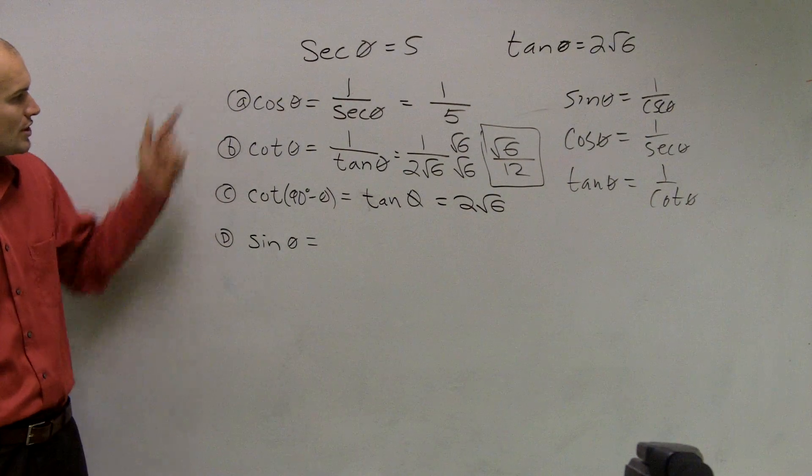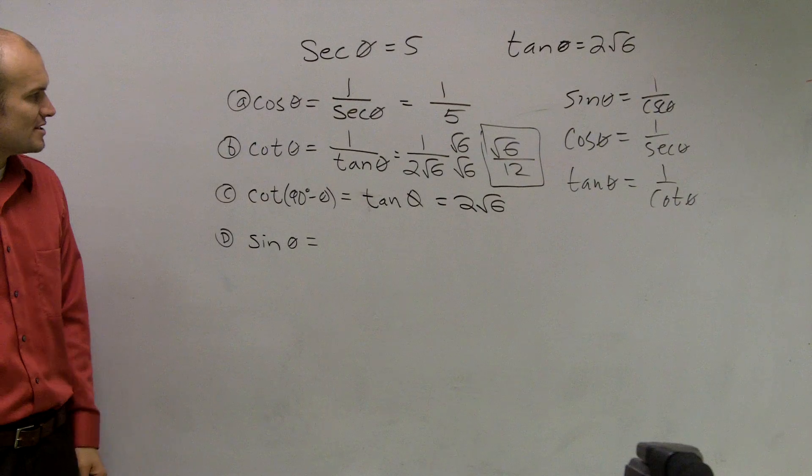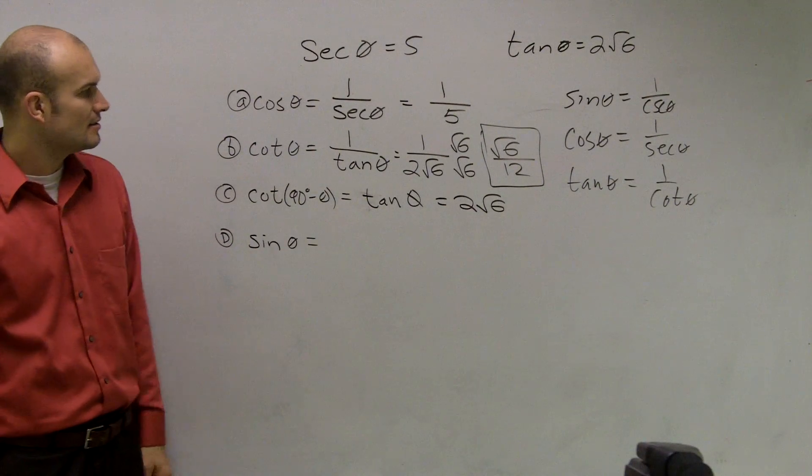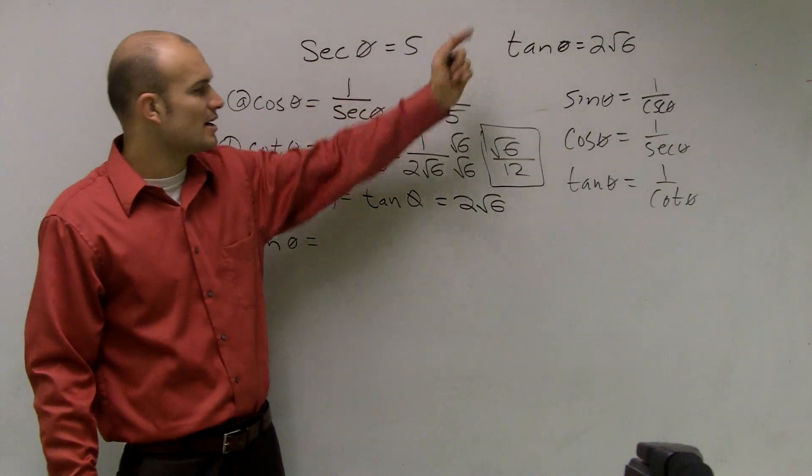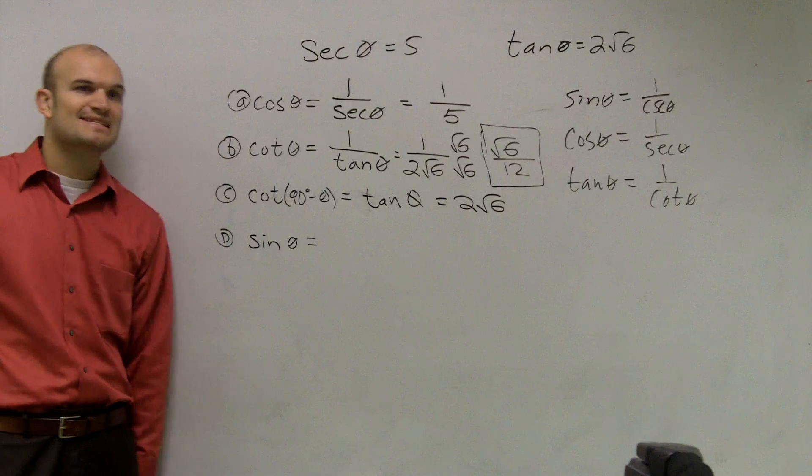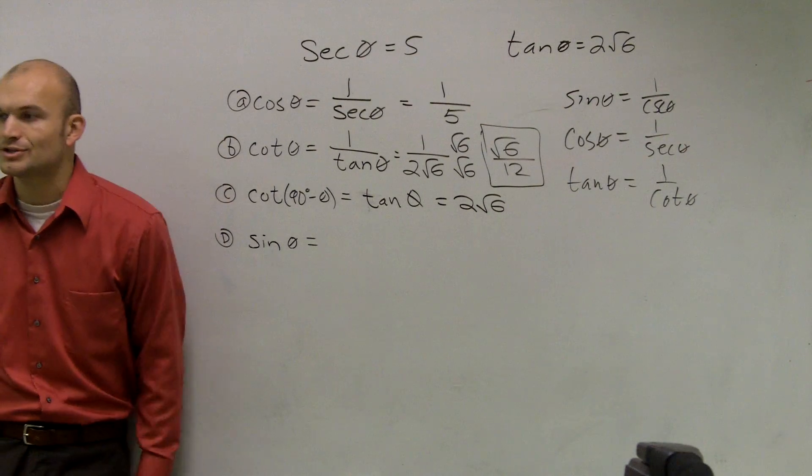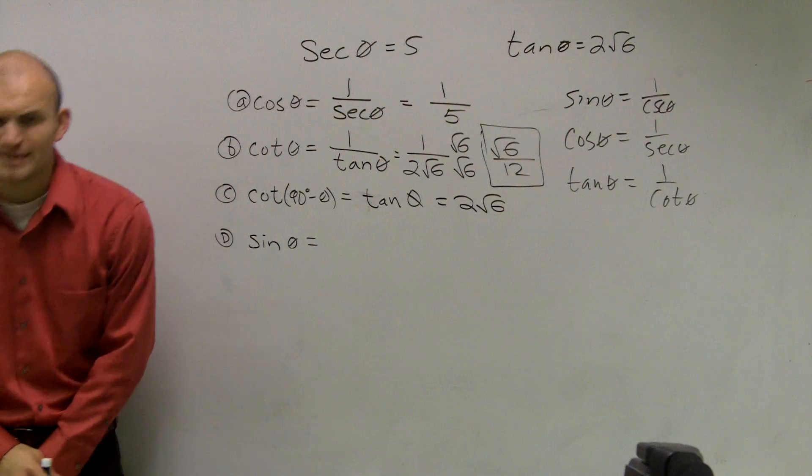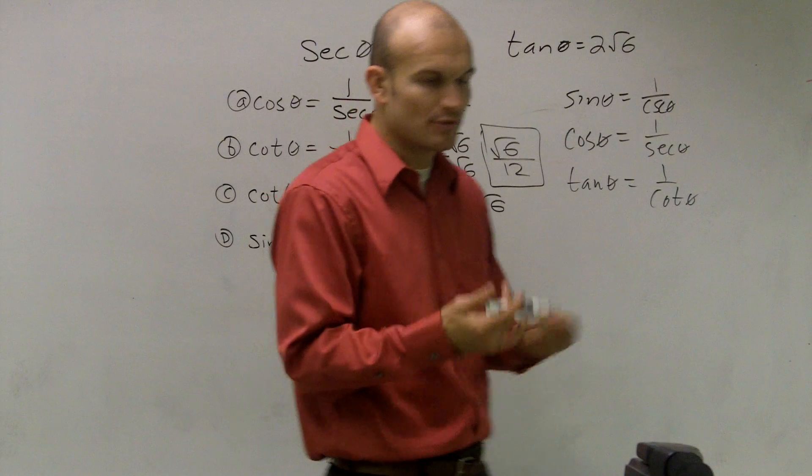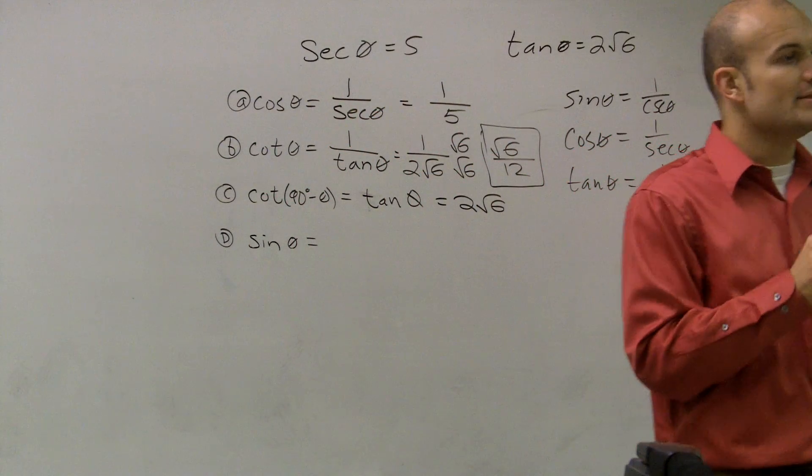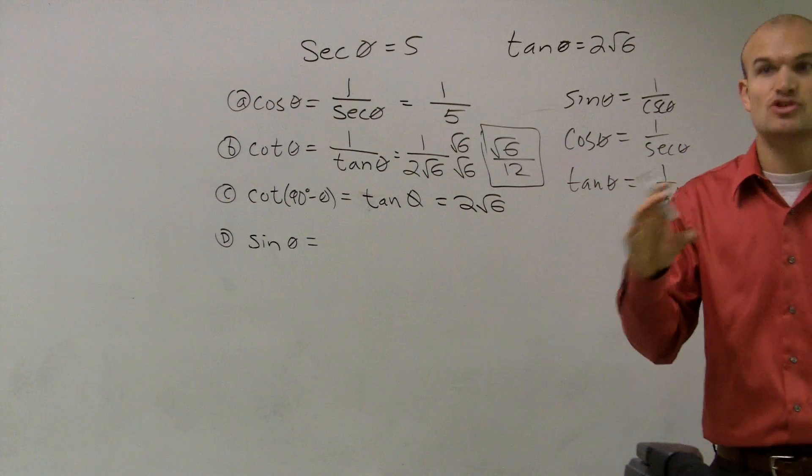And last one is sine. Well, I know what cosine is, I know what cotangent is, I know what tangent is, I know what secant is. So I need to figure out what sine is. Now, what I want you to do is to think about how can I figure out what sine is. What relationships do I know?